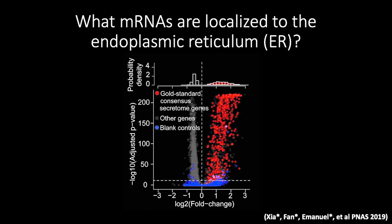We then highlighted in red our gold standard secretome genes, which we had expected to be enriched in the ER. And indeed, we see a large number of these genes as being significantly highly enriched in the ER compartment.